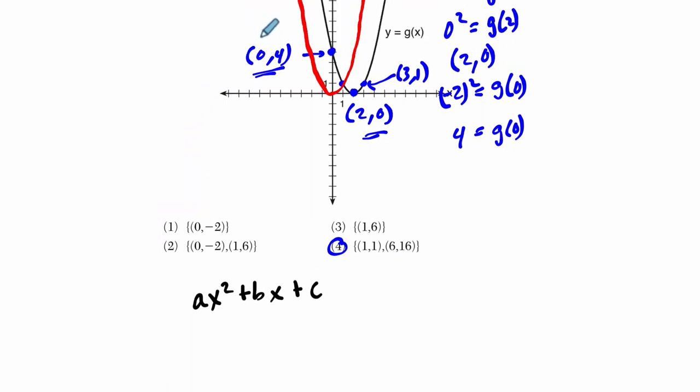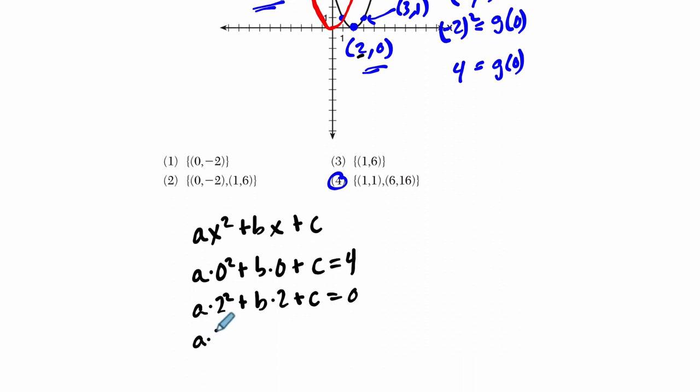We know some things about this equation. We know if you plug in 0 for x, the output is 4. So if I have some coefficient a times 0 squared plus b times 0 plus c, I know that the output is 4. I also know if you plug in 2, you get 0. So a times 2 squared plus b times 2, if x is 2, plus c, I get 0. And I know if I plug in 3, I get 1. Now I'm going to look at the first equation because a times 0 squared is 0, b times 0 is 0, so c is 4.